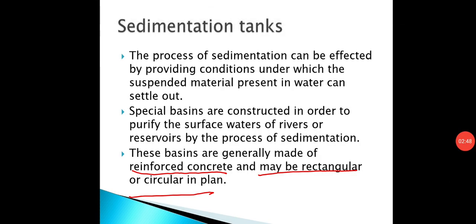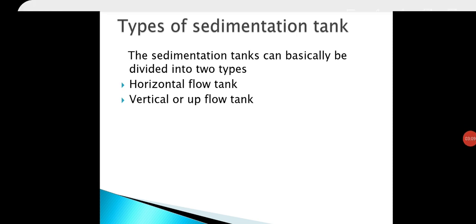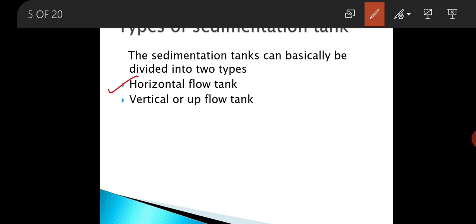A plain sedimentation tank can remove as much as 70% of the suspended impurities present in water. Sedimentation tanks can basically be divided into two types: one is horizontal flow tank, and the second one is vertical or upflow tank.